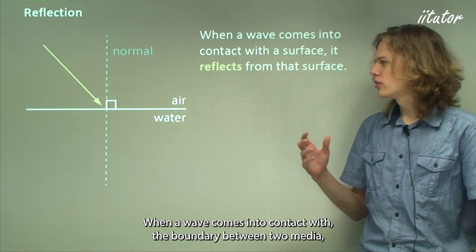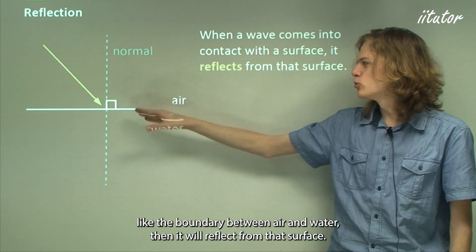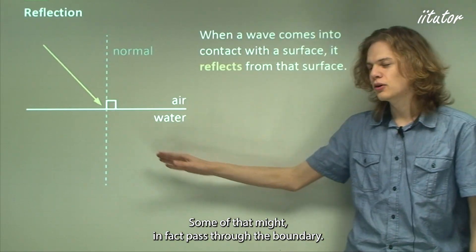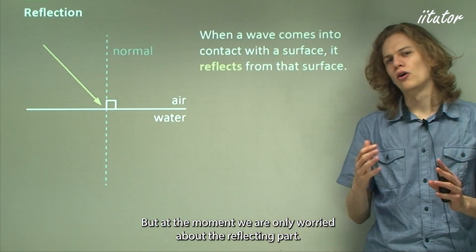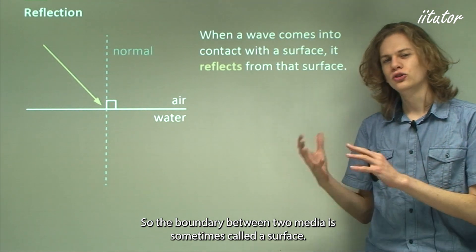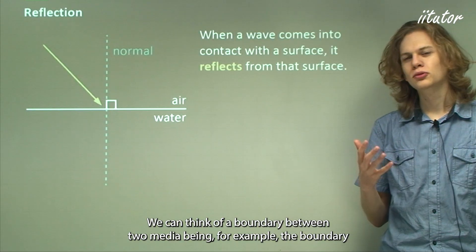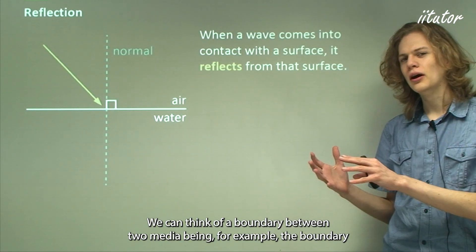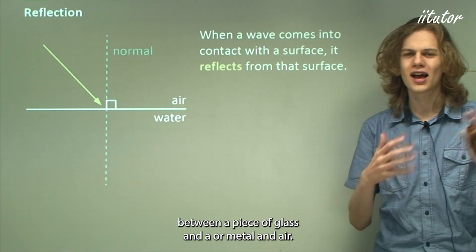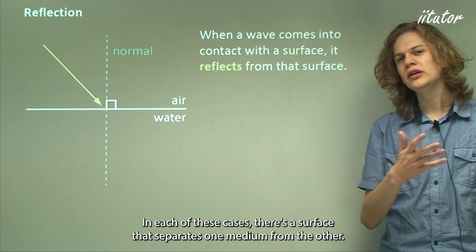When a wave comes into contact with the boundary between two media — like the boundary between air and water — it will reflect from that surface. Some of it might pass through the boundary, but for now we're only concerned with the reflecting part. The boundary between two media is sometimes called a surface, for example the boundary between glass and air or metal and air.